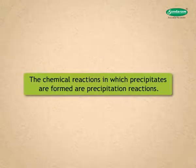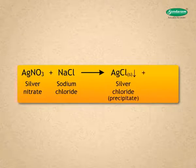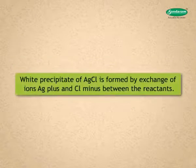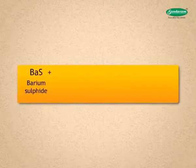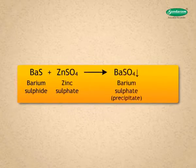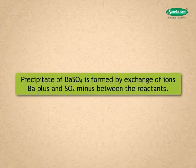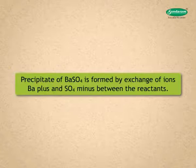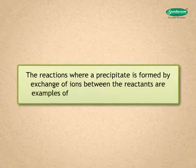The chemical reactions in which precipitates are formed are called precipitation reactions. Another example: AgNO₃ + NaCl → AgCl(precipitate) + NaNO₃. A white precipitate of AgCl is formed by exchange of ions Ag⁺ and Cl⁻ between the reactants. One more example: BaS + ZnSO₄ → BaSO₄ + ZnS. BaSO₄ is a precipitate, formed by exchange of ions Ba²⁺ and SO₄²⁻ between the reactants. The reactions where a precipitate is formed by exchange of ions are examples of double displacement reactions.